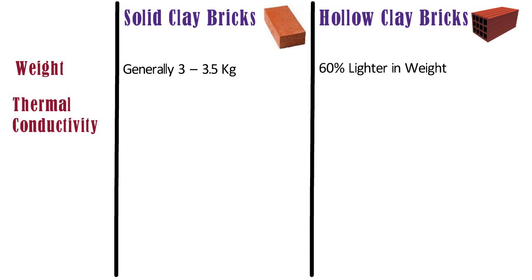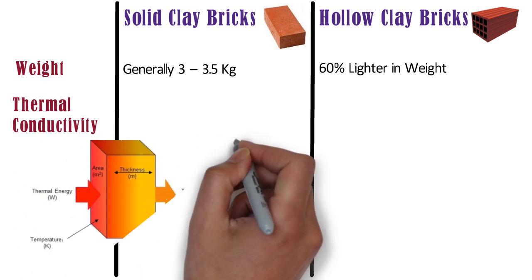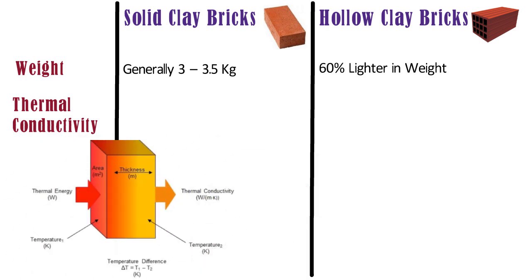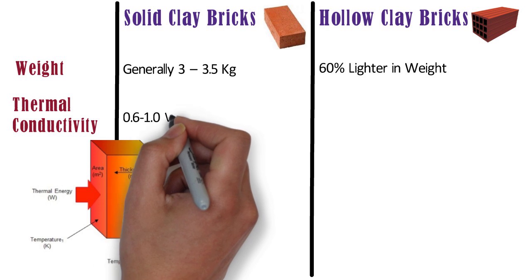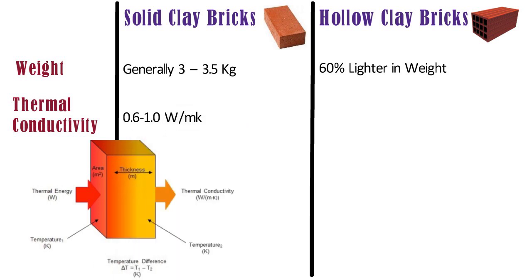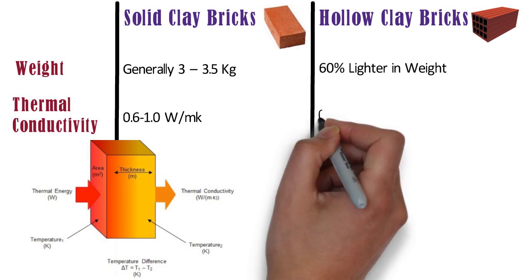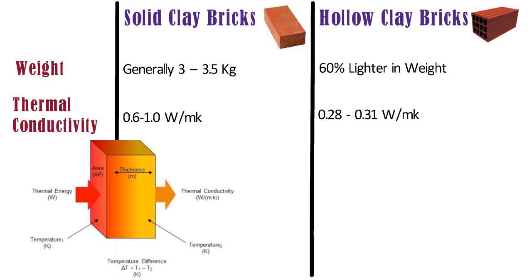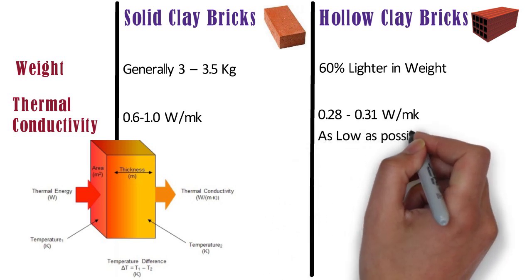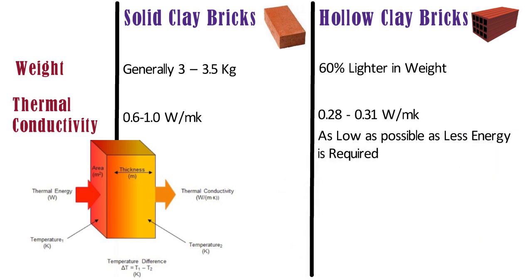Thermal conductivity means the quantity of heat that passes in unit time through unit area. The thermal conductivity of solid clay bricks is around 0.6 to 1 Watt per mK. Whereas, the thermal conductivity of hollow clay bricks is around 0.28 to 0.31 Watt per mK, which is less than solid clay bricks. This value must be as low as possible as less energy is required for cooling or heating the indoors of the building.